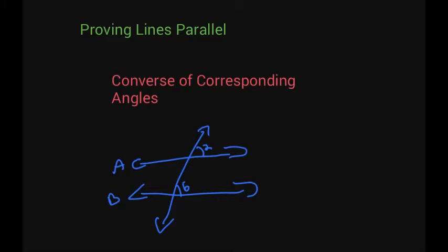Alright, let's prove some lines are parallel. First we're going to do a couple of definitions. We've done the corresponding angles, so we're going to do the converse of some of the rules we did. So if corresponding angles are congruent — I have angle 2 and angle 6, they're corresponding — if they're congruent, that means A is parallel to B.